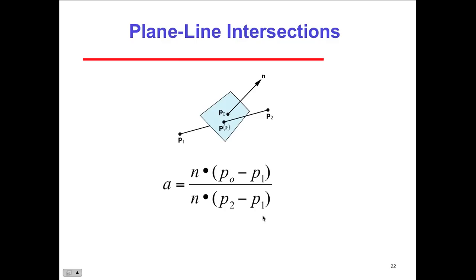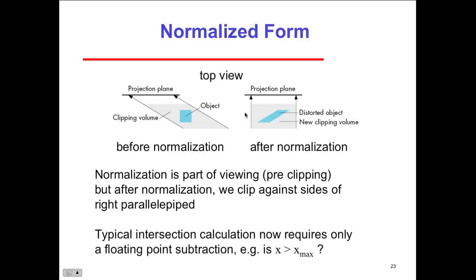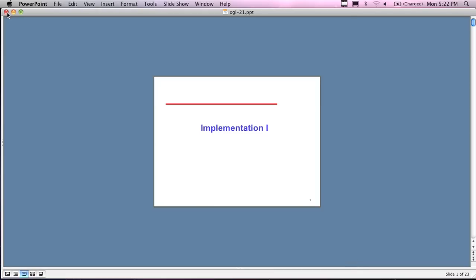In terms of clipping and normalization: general 3D clipping requires intersection of line segments against an arbitrary plane. In normalized form — a term used a lot so far — normalization is part of the viewing pre-clipping, but after normalization we clip against the sides of the right parallel piped pipeline. We have a distorted object and a new clipping volume created. The typical intersection calculation requires only a floating-point subtraction, which is very efficient.